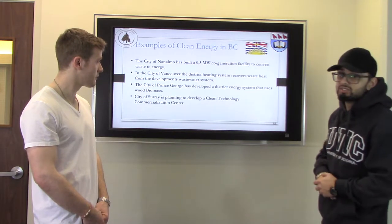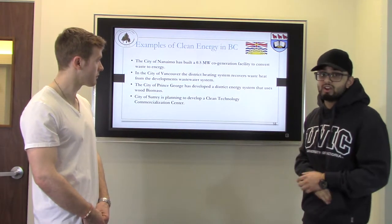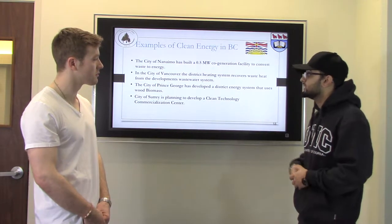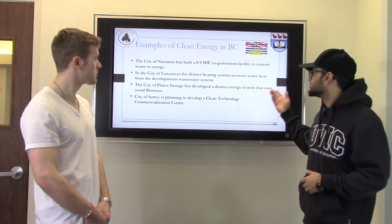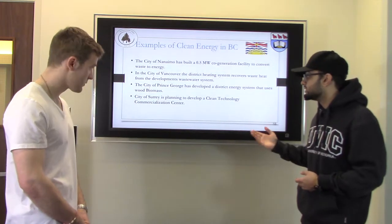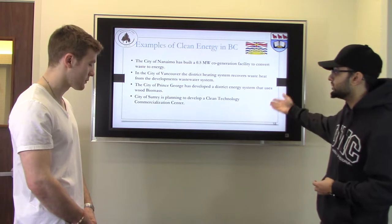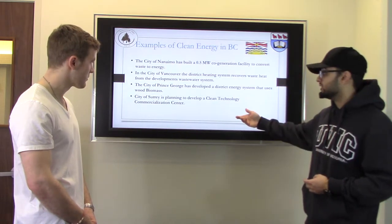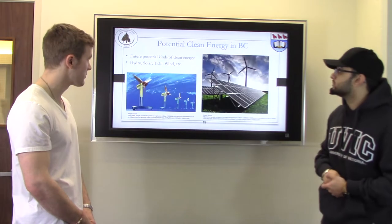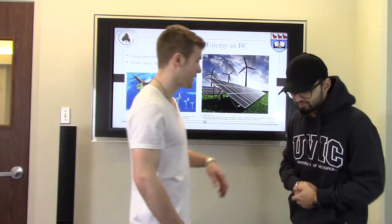Some examples of clean energy in BC: the City of Nanaimo built a 0.5 megawatt cogeneration facility to convert waste to energy. In Vancouver, a district heating system recovers waste heat from the wastewater system. Prince George developed a district energy system using wood biomass, and the City of Surrey is planning a clean technology commercialization centre. I'll pass it on to Ryan to talk about the potential for clean energy in BC.